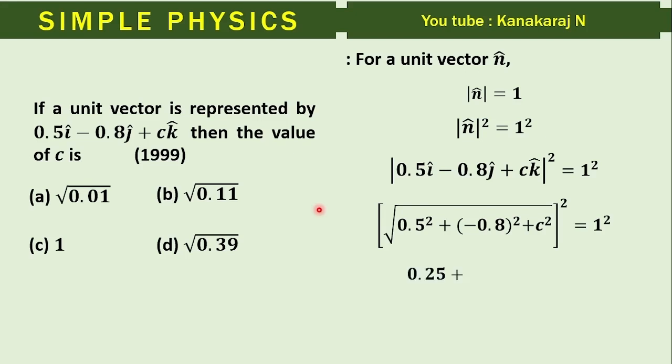So on simplifying this we get 0.25 plus 0.64 plus c square equals 1. On simplifying this we get c square equals 1 minus 0.89 and c equals root of 0.11.